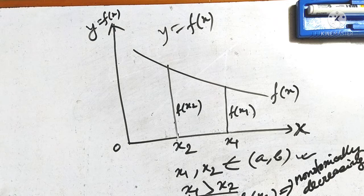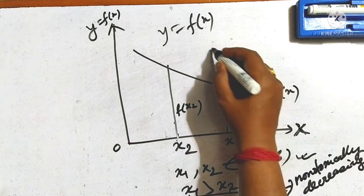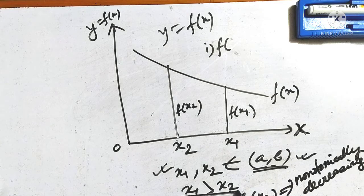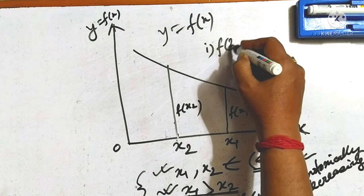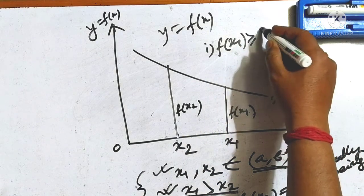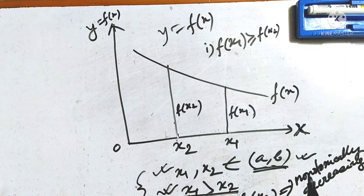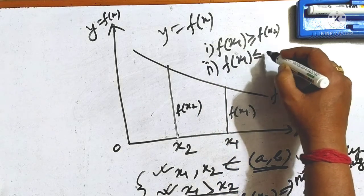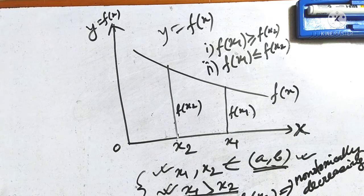So, when we see that fx1 is less than or equals to fx2, we call it a monotonically increasing function. When fx1 is less than or equals to fx2, we call it a monotonically decreasing function.